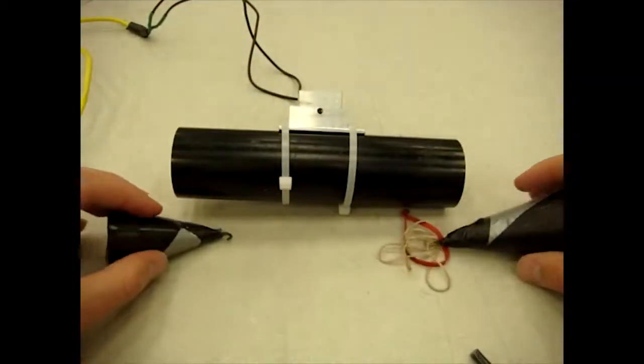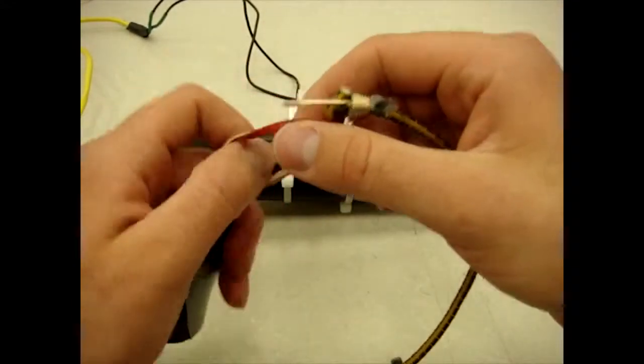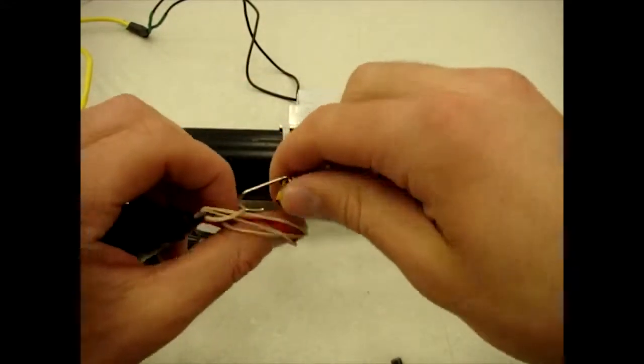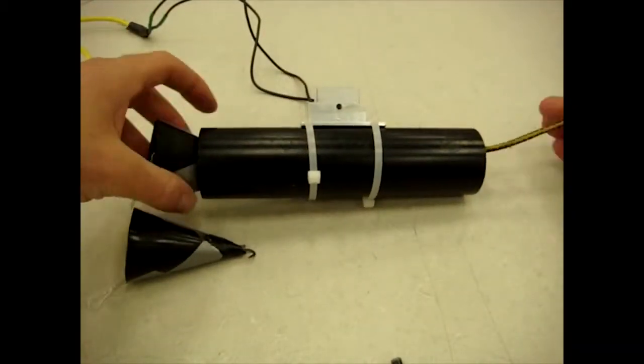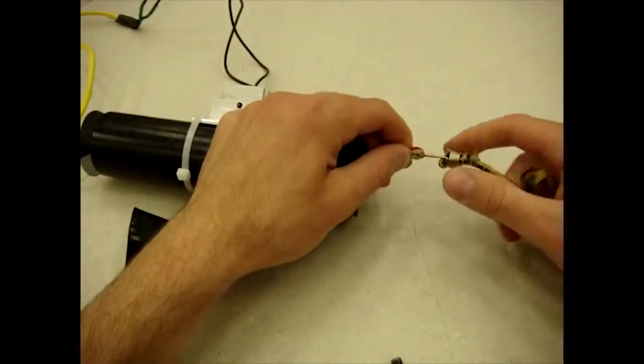Next is you're going to want to put your end caps in. This can be a little tricky but if you take any type of string with a hook on it and hook it on to your rubber band and then take that string and thread it through so that one end is in and then pull the string through until the rubber bands show through.